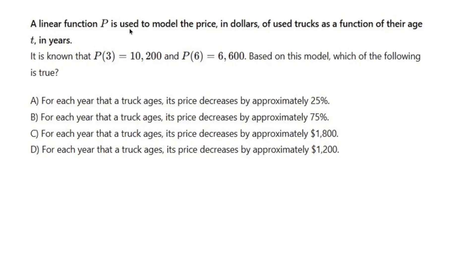A linear function P is used to model the price in dollars of used trucks as a function of their age, T, in years. It is known that P of 3 equals $10,200 and P of 6 is $6,600.